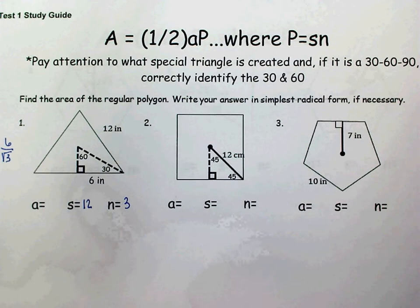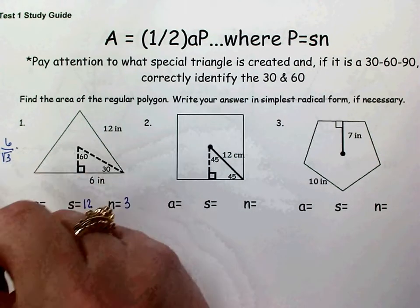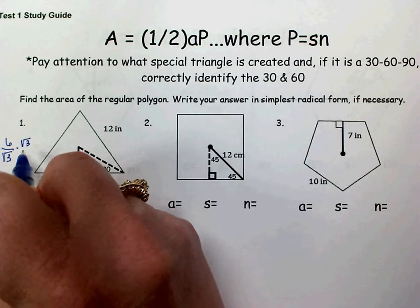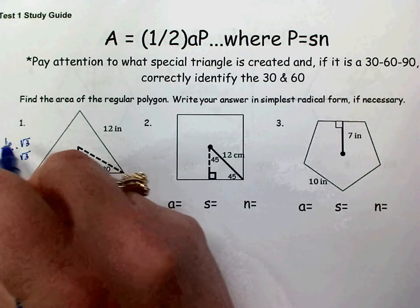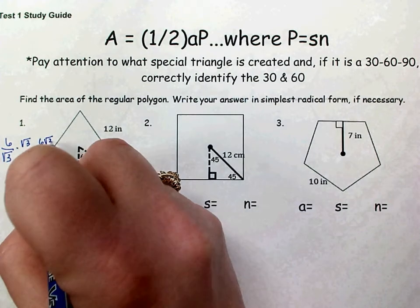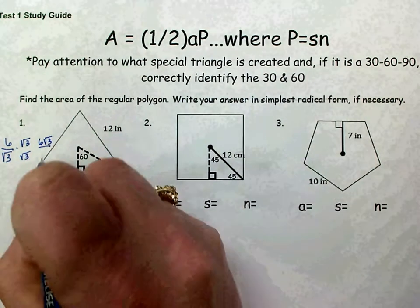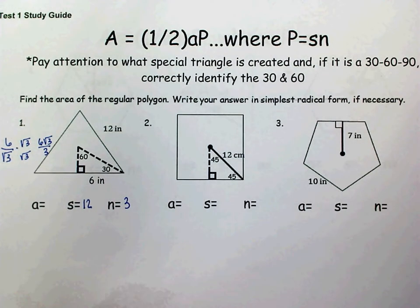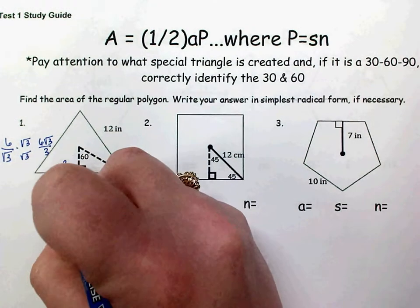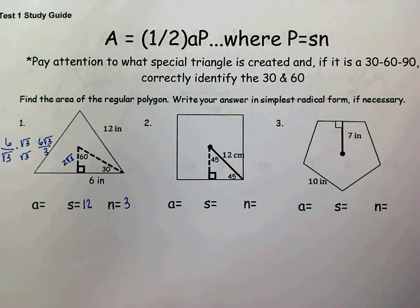Since we can't have a radical in the denominator, we rationalize by multiplying the numerator and the denominator by the square root of 3. So we would have 6√3 in our numerator. The √3 times √3 is just 3. And then we simplify 6 divided by 3, which is 2. So my apothem is 2√3.